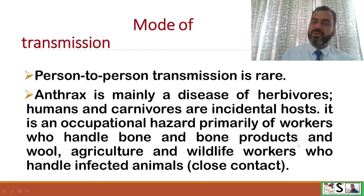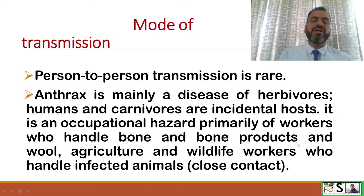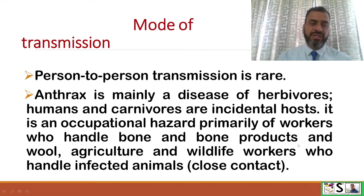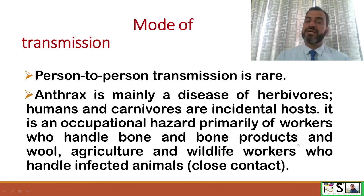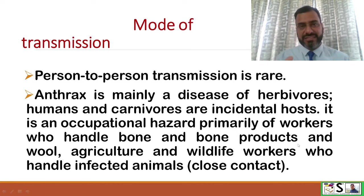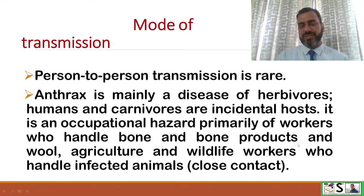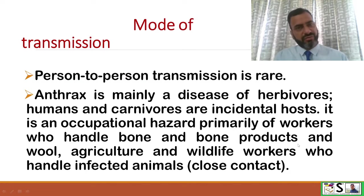Mode of transmission — how does it spread? Person-to-person transmission is very rare. Anthrax is mainly a disease of herbivores. Humans and carnivores are incidental hosts. It is an occupational hazard primarily of workers who handle bones and bone products and wool, agriculture and wildlife workers who handle infected animals. Close contact with infected animals leads to transmission of anthrax.